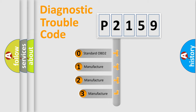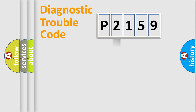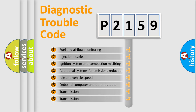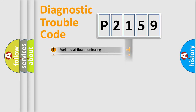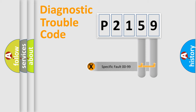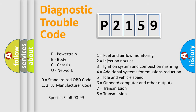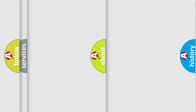If the second character is expressed as zero, it is a standardized error. In the case of numbers 1, 2, or 3, it is a more specific expression of a car-specific error. The third character specifies a subset of errors. This distribution is valid only for the standardized DTC code, and only the last two characters define the specific fault of the group.